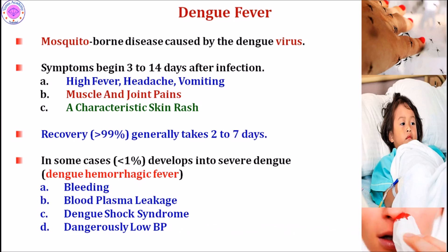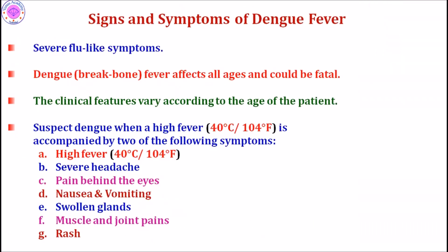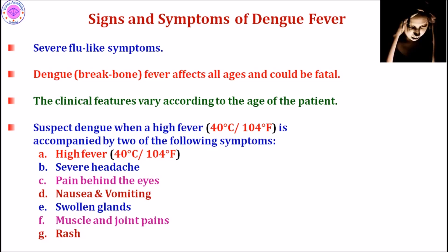In severe dengue hemorrhagic fever, there is a chance of bleeding, plasma leakage, dengue shock syndrome, and dangerously low blood pressure. Dengue, also called 'break bone fever,' presents with severe flu-like symptoms and affects all ages — children, adults, and older people. The clinical features vary according to the age of the patient.